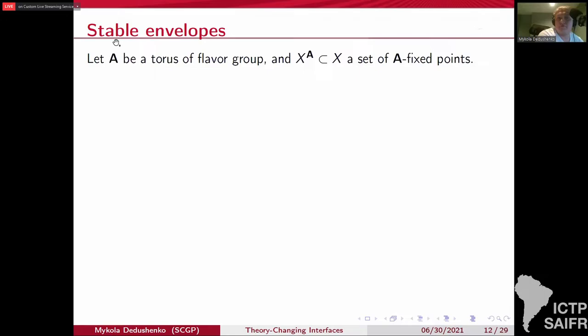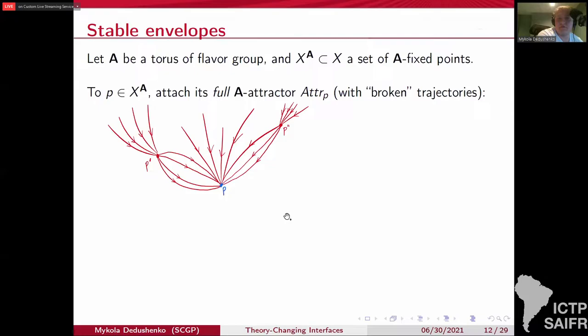Let me also quickly tell you what stable envelopes are. Let A be the torus of our flavor group. Could be the maximal torus, but you can think of the maximal torus. And X is our Higgs branch. And X^A is the fixed locus with respect to the A action. Pick a fixed point P in the fixed locus. Then you can consider the full attractor of P for the complexified action of your torus. So there are these red lines represent trajectories or orbits of the complexified action. You can consider all orbits that end at P.